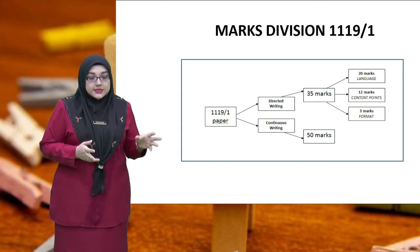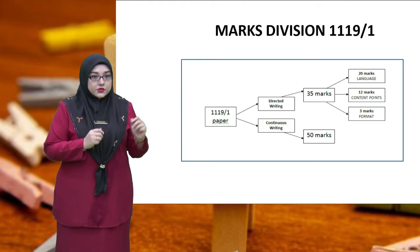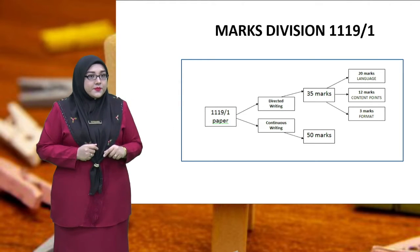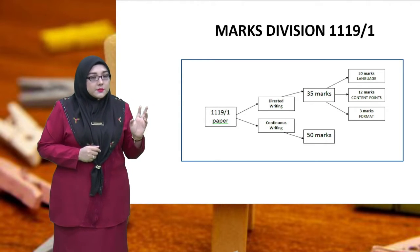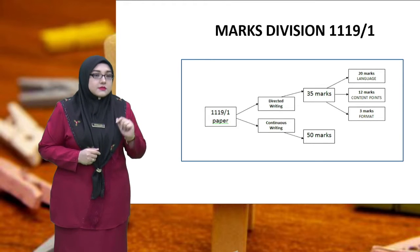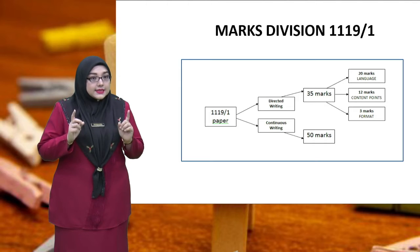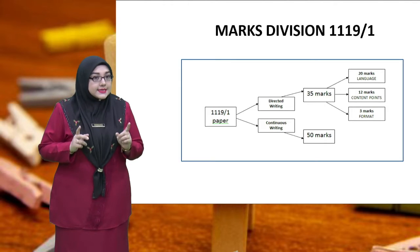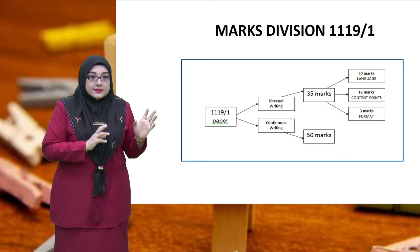For continuous writing, or CW, the total marks are 50. That's a lot, so make sure you do not leave this section blank.